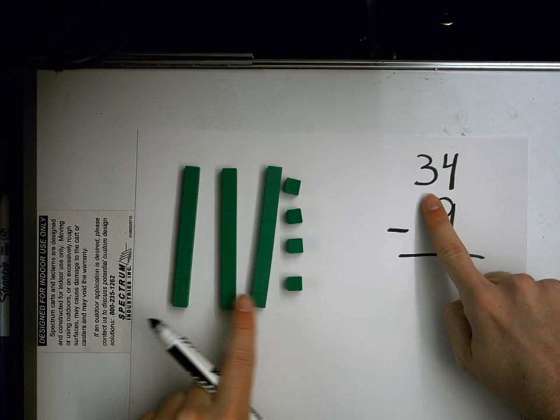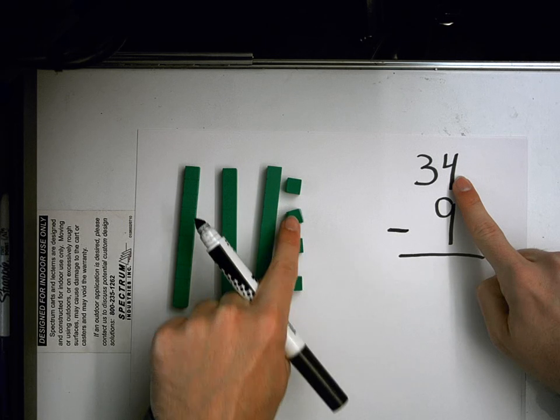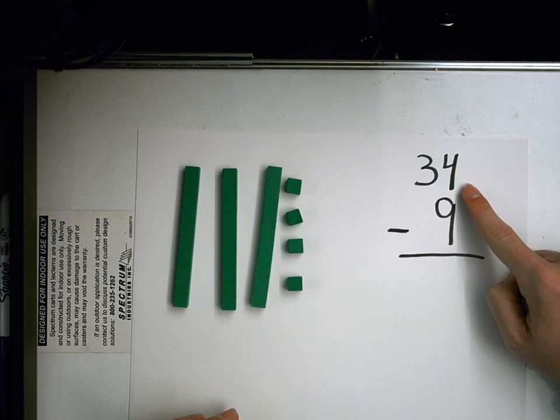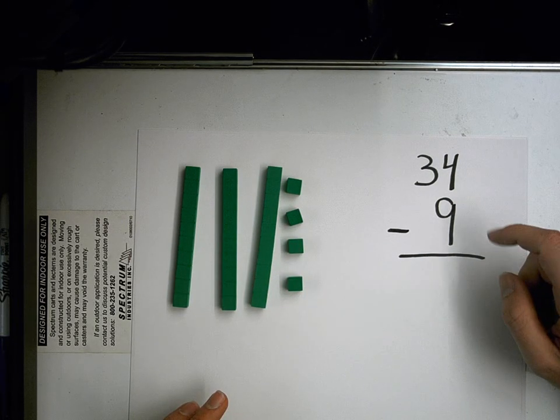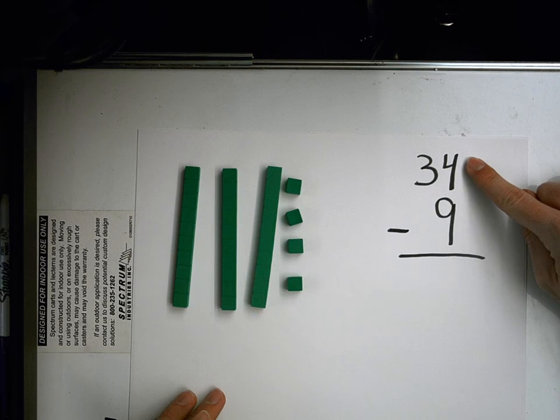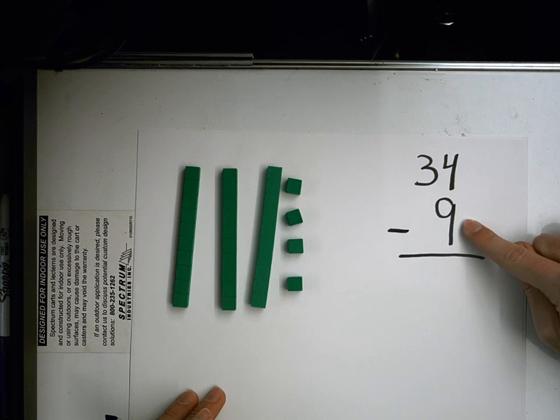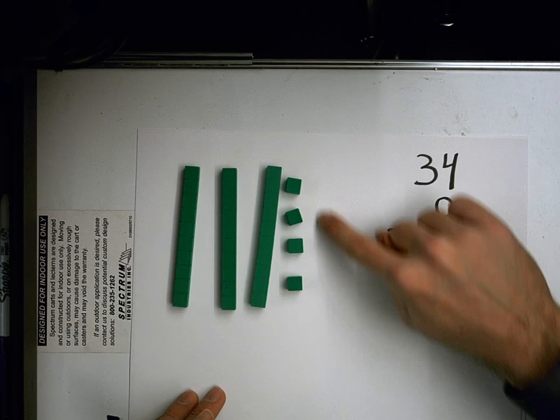So I have my 3 tens and my 4 ones, and that makes 34. But when I look to my ones place numbers, 34 take away 9, I don't have 9 ones to take away.